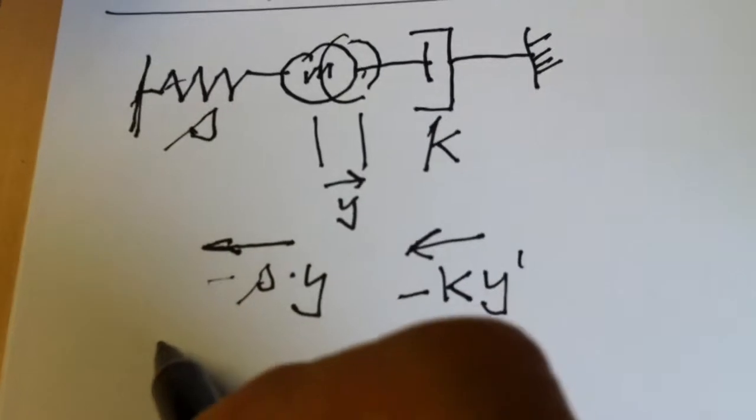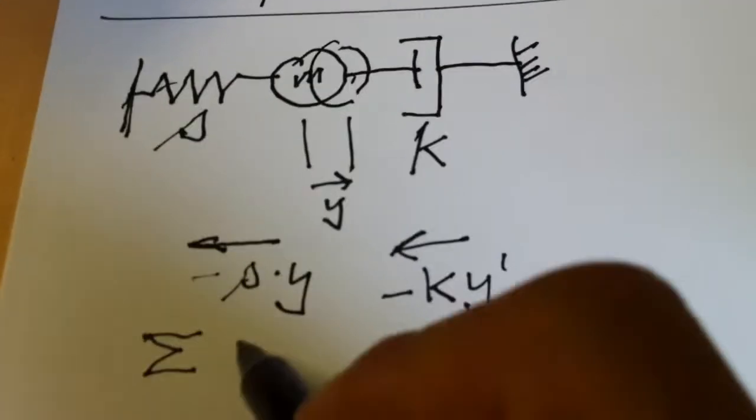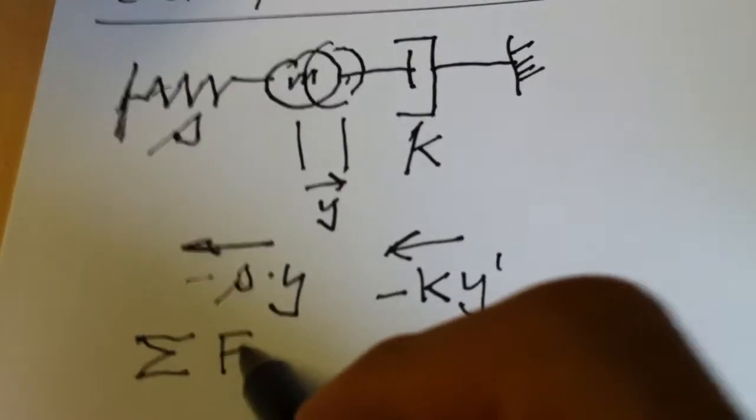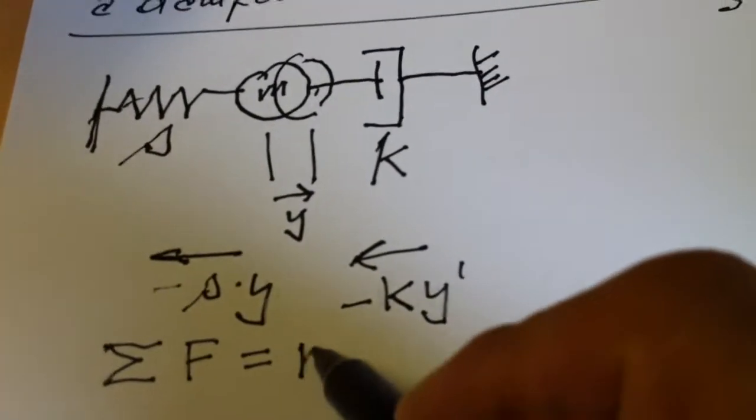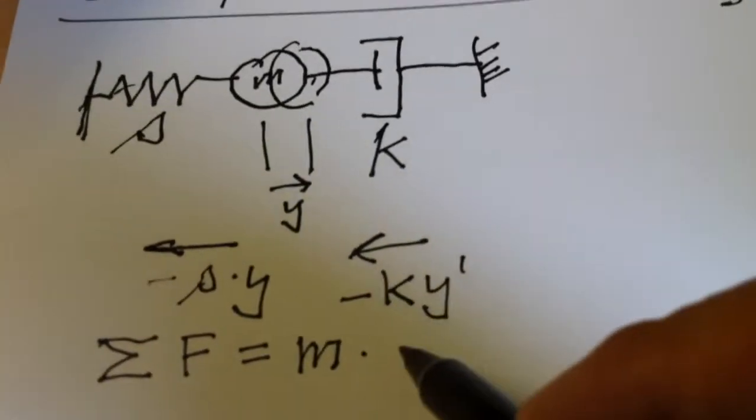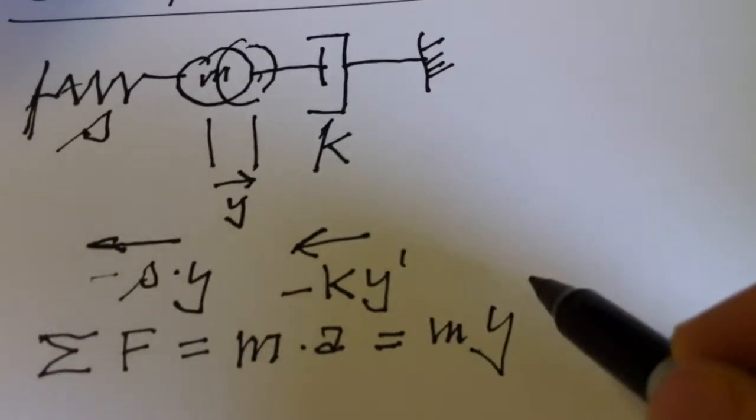Now, Newton says that the sum of all forces must be equal to the mass times acceleration. And we know that acceleration is the second derivative.